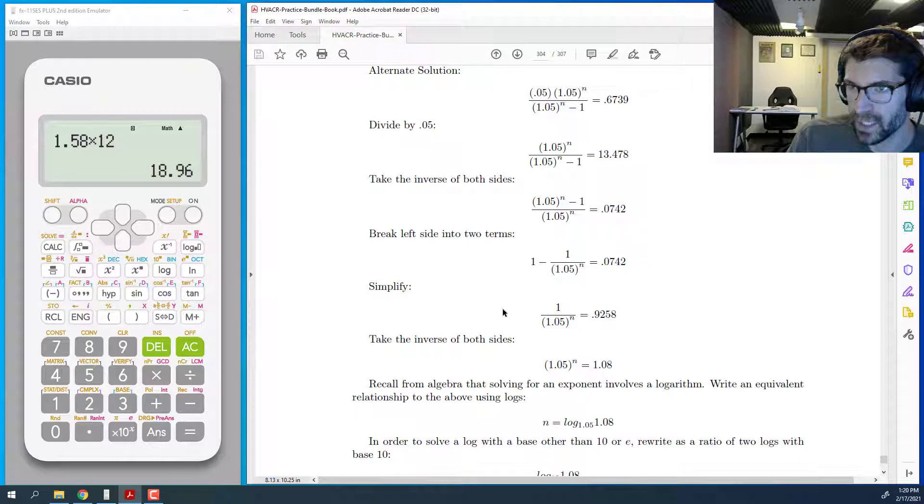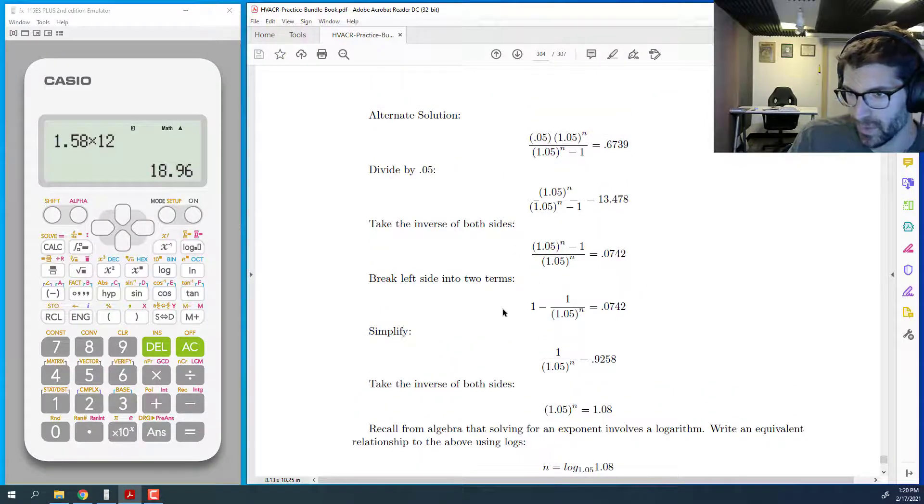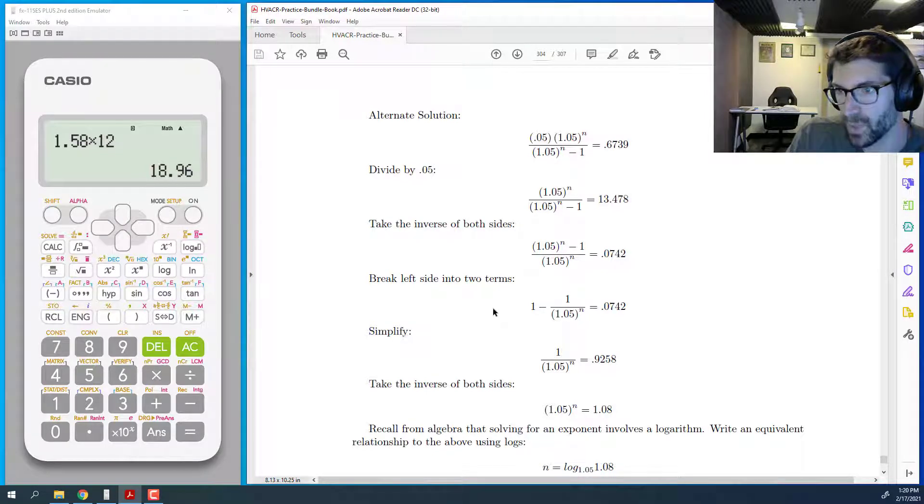So that is potentially much easier than the alternative. Let me show you the alternative now. Again, trial and error is also an option here. So if you're comfortable with just kind of doing it three or four times until you get the closest answer, that's an option as well.